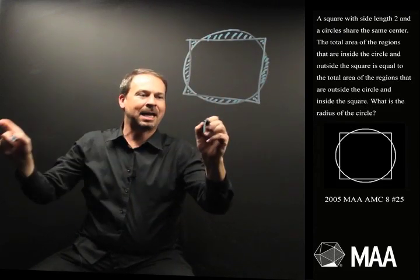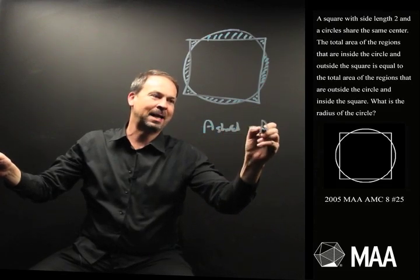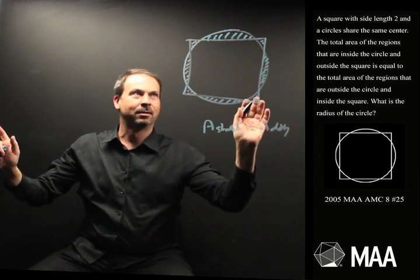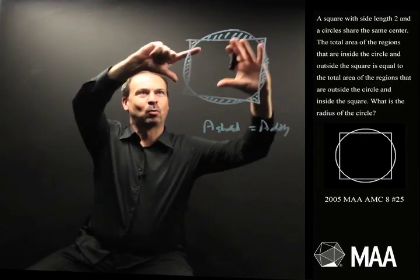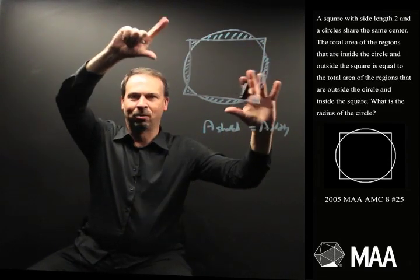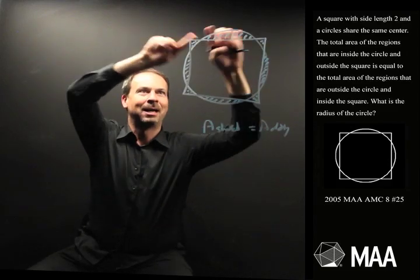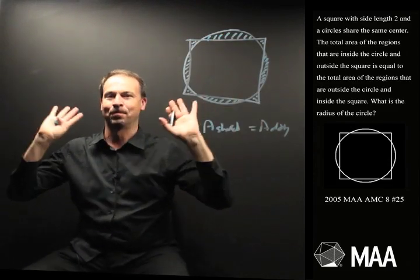So I guess the area of the shaded stuff, we're being told, equals the area of the dotty stuff. Despite what my picture looks like, I've got a bad picture. All right, so somehow the square and the circle are slightly larger or smaller scaled correctly. So these dotty areas add up to the same as the shaded areas. Bingo.